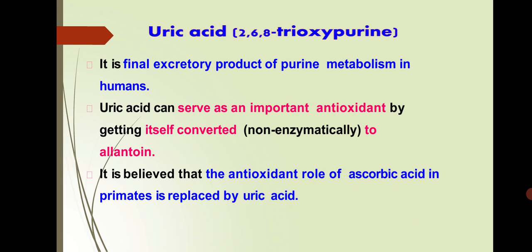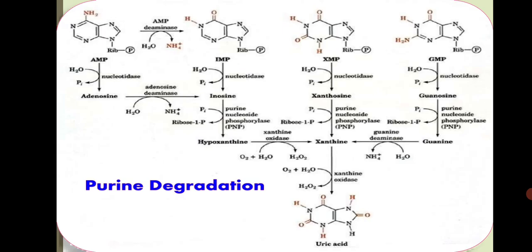Uric acid is the end product of purine metabolism, basically in humans. Uric acid can also serve as an important antioxidant, and it is believed that the antioxidant role of ascorbic acid is replaced by uric acid in primates. So uric acid is important in primates. This is purine degradation or purine catabolism.